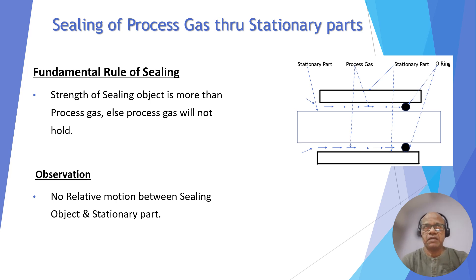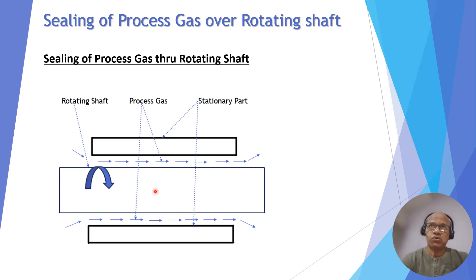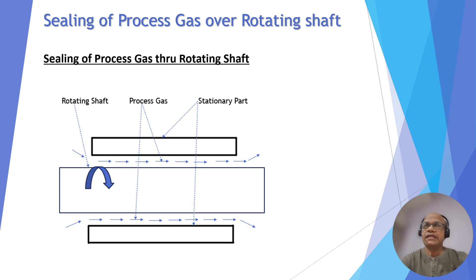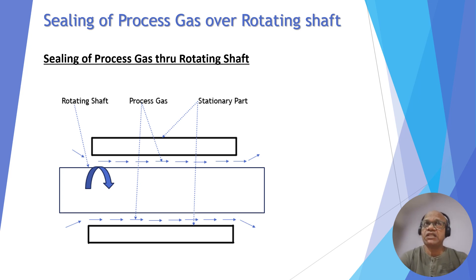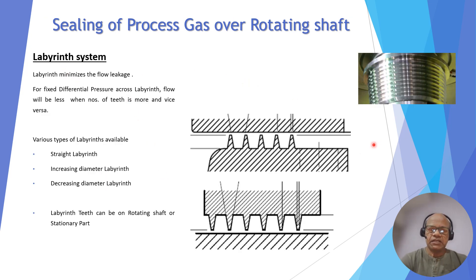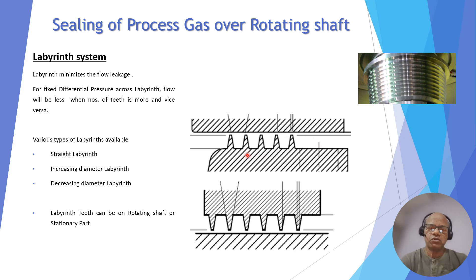When there is no relative motion, O-rings or valves and end blinds can be used. But what happens when there is relative motion — for example, a rotating shaft inside a housing with gas flowing between them? In that case, the next sealing arrangement is the labyrinth seal. A labyrinth consists of a number of teeth that control and minimize the flow between them.